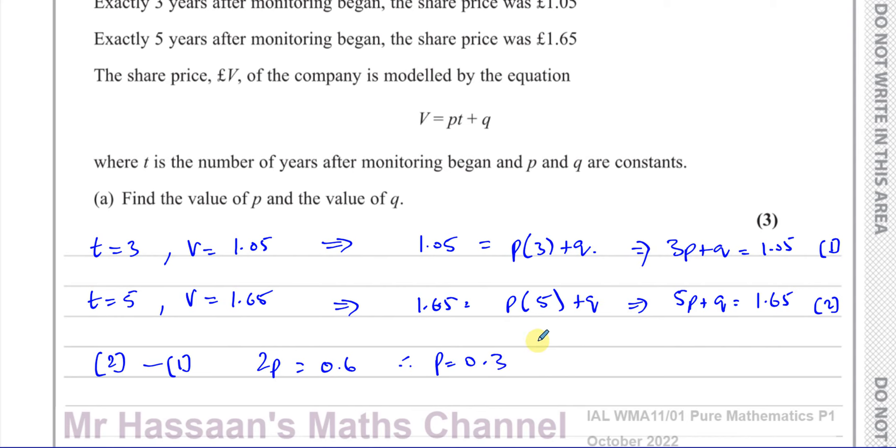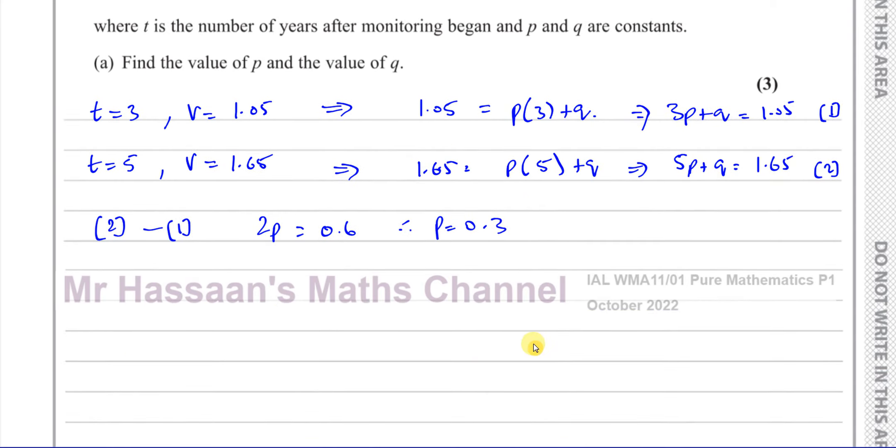And to find what Q is, we can substitute P equals 0.3 into either of the two equations. Let's choose the first equation. So we're going to put P equals 0.3 into the first equation. So we have 3 times 0.3 plus Q equals 1.05. So that's 0.6 plus Q equals 1.05.